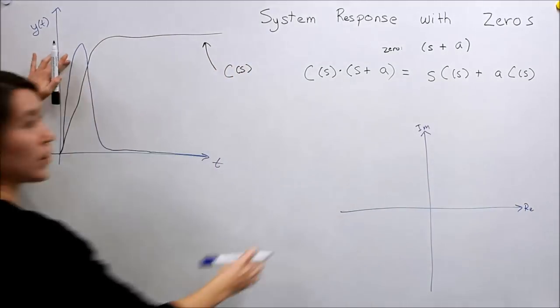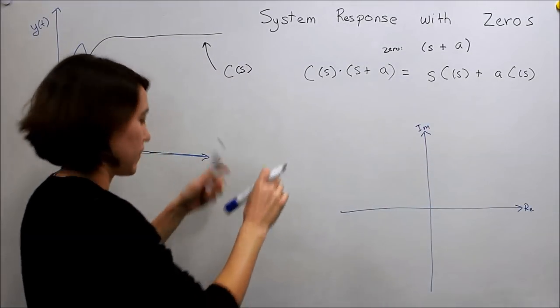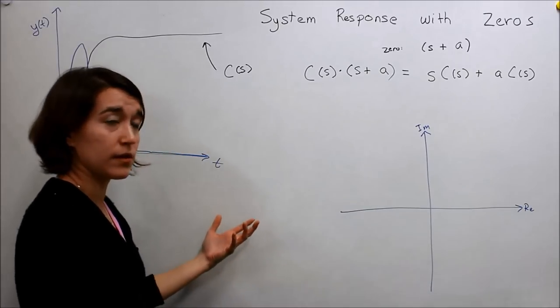And this blue line here. And then A, we'd have some sort of scalar in C(s). So first let's take the case where A, the zero, is very negative.